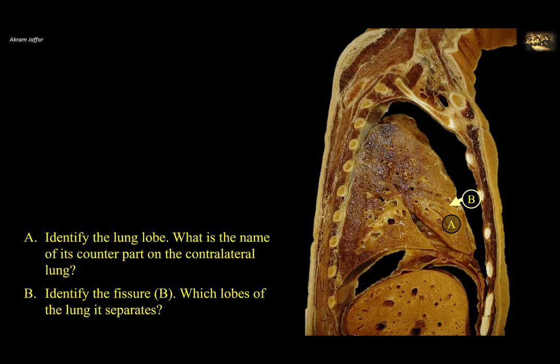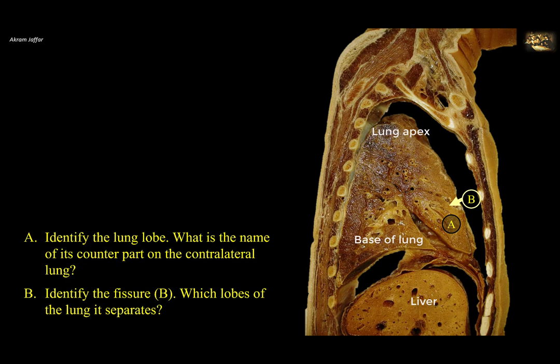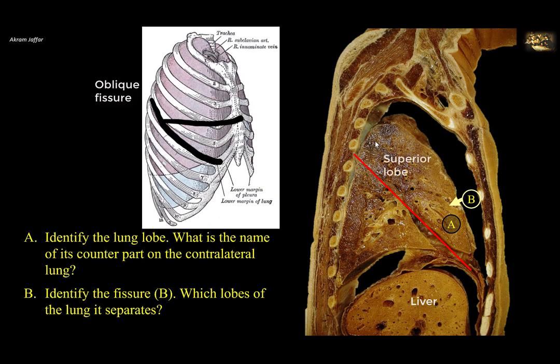Identify the lung lobe. What is the name of its counterpart on the contralateral lung? And identify fissure B — which lobes of the lung does it separate? This is a sagittal section of the thorax to the right of the midline. You can see the liver below the right dome of the diaphragm. Note the conical shape of the lung with a base and an apex. This is the right lung, and the oblique fissure divides the organ into separate upper and lower lobes.